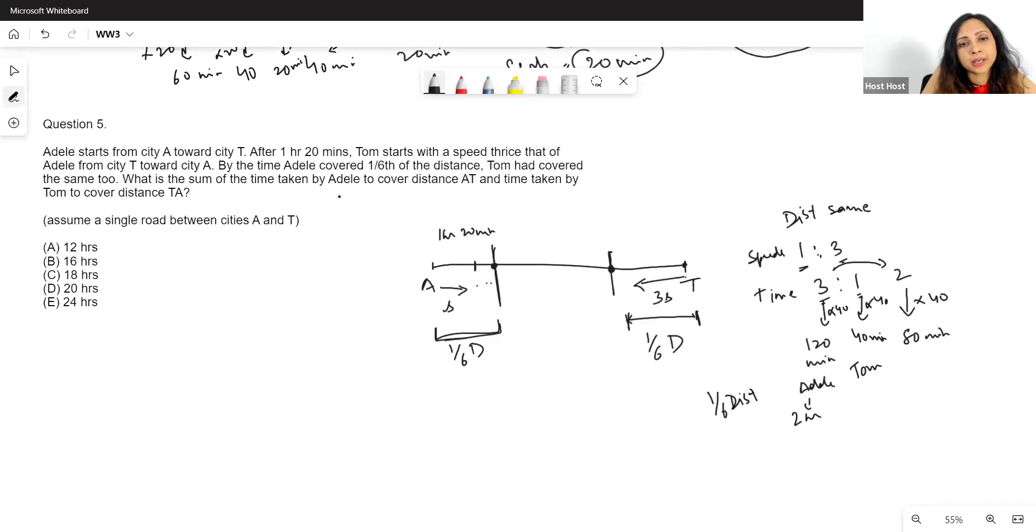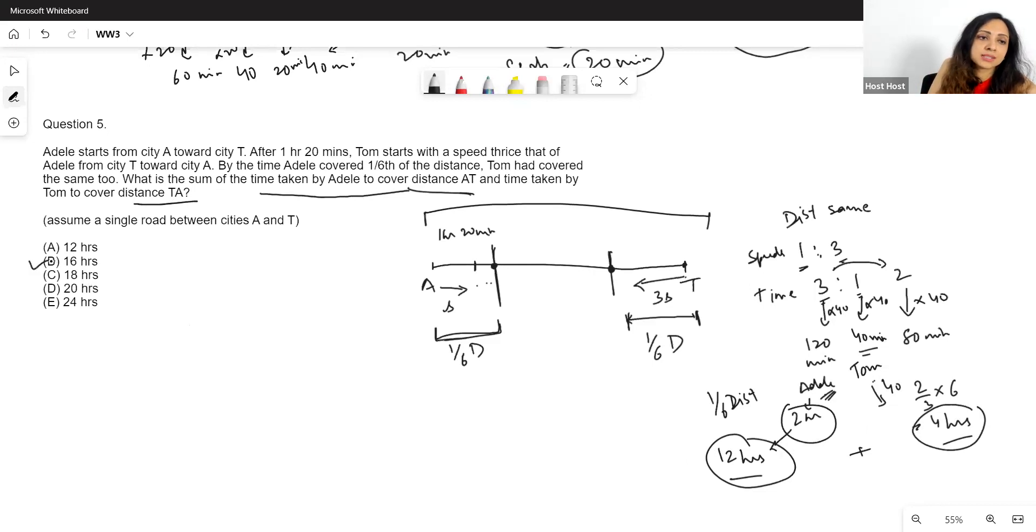So 120 minutes is the time taken by Adele. And 40 minutes is the time taken by Tom. So basically Adele takes 2 hours and Tom takes 40 minutes for how much? For 1 sixth of the distance. Make sense? Now, what is the sum of the time taken by Adele to cover distance AT and time taken by Tom to cover distance TA? Now we're talking about the entire distance. Till now, we only talked about 1 sixth of the distance. So time taken by Adele to cover 1 sixth of the distance was what? 2 hours. So then time taken by Adele to cover the entire distance will be simply 12 hours. And time taken by Tom to cover 1 sixth of the distance was 40 minutes. So the time taken by Tom to cover the entire distance will just be 40 into 6, which I can say is 2 by 3 hours into 6, which gives me 4 hours. So then the sum of the times taken, that is 12 hours and 4 hours. Total sum is 16 hours. So our answer over here is E.